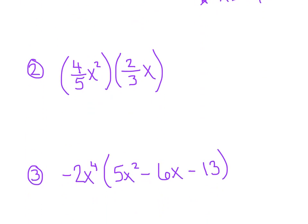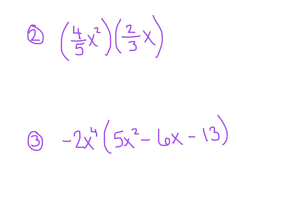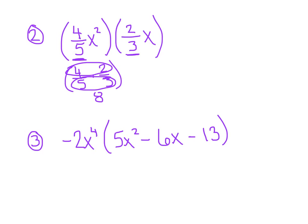These fractions can drive us nuts. Step one: multiply the numerical coefficients — 4/5 times 2/3. Multiply the numerators to get 8, and multiply the denominators to get 15, so 8/15 is the new coefficient. Then focus on the like terms: x squared times x to the 1st — again an invisible 1 — add the powers to get x cubed. So 8/15 x cubed is the final product.